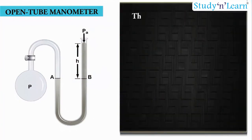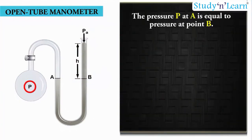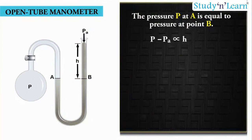The pressure P at A is equal to the pressure at point B. What we normally measure is the gauge pressure, which is P minus P_A, and is proportional to manometer height H. Pressure is the same at the same level on both sides of the U-tube containing a fluid.